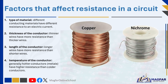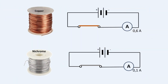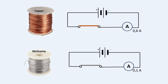Type of material influences resistance. Different conducting materials offer different amounts of resistance against electrical current. For example, copper wire conducts a greater current than an equal length of nichrome wire of the same thickness — nichrome wire therefore has a greater resistance. In a circuit where an ammeter is connected in series, a copper wire gives a reading of 0.6 amps, while a nichrome wire of the same length and thickness gives a reading of only 0.1 amps. This shows that copper has lower resistance compared to nichrome.